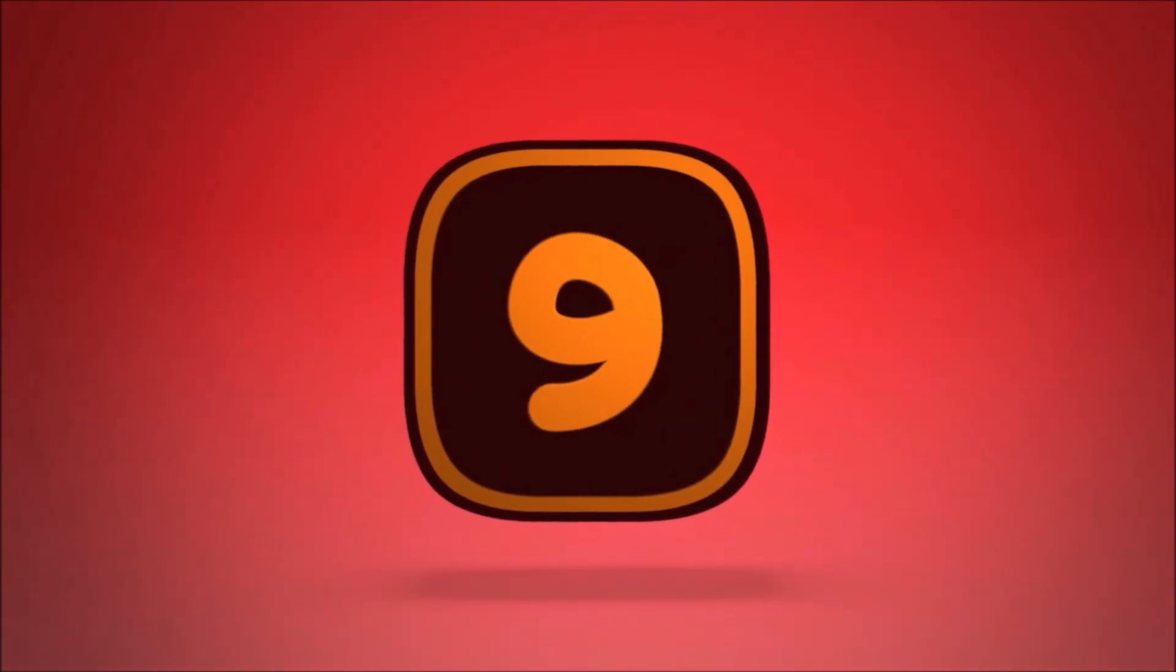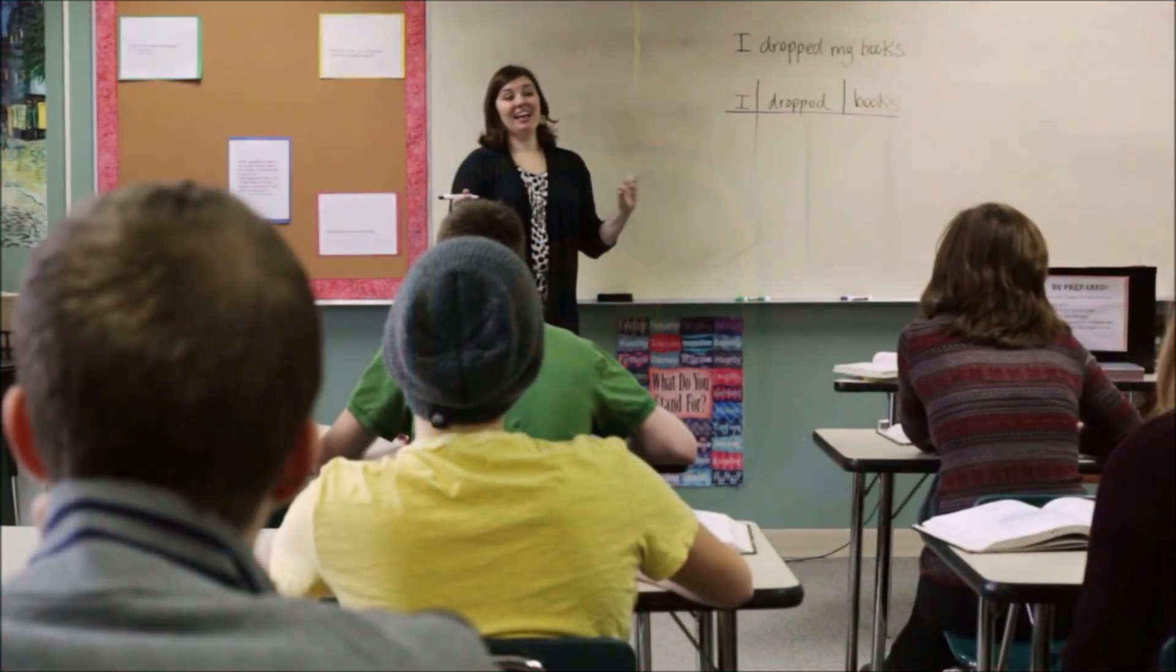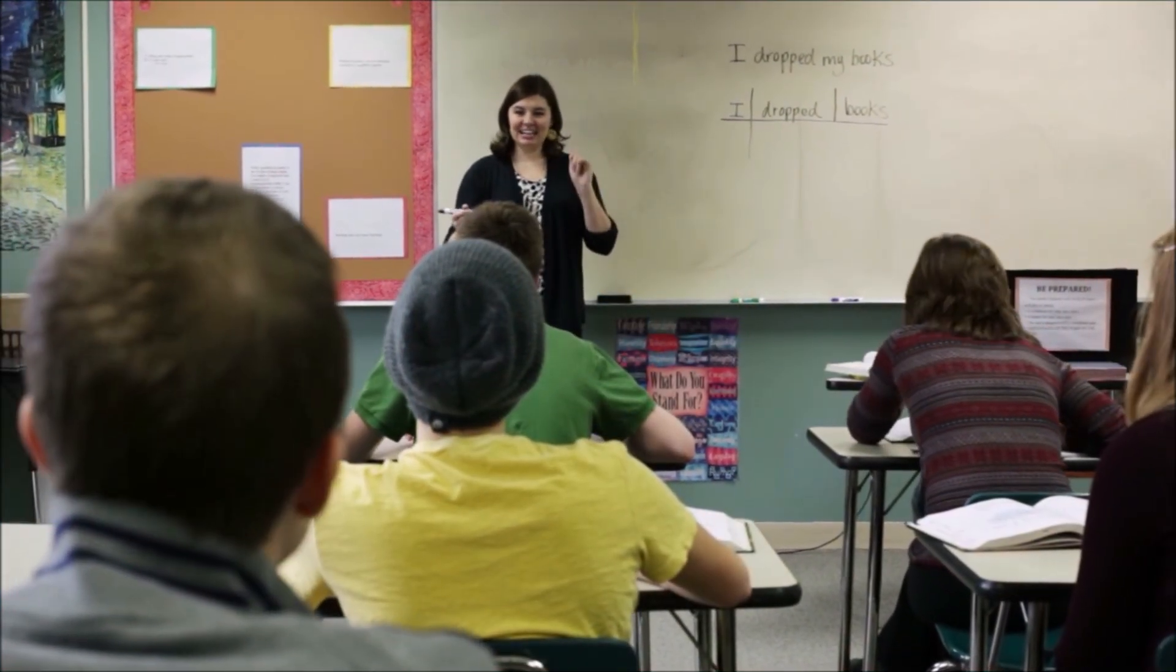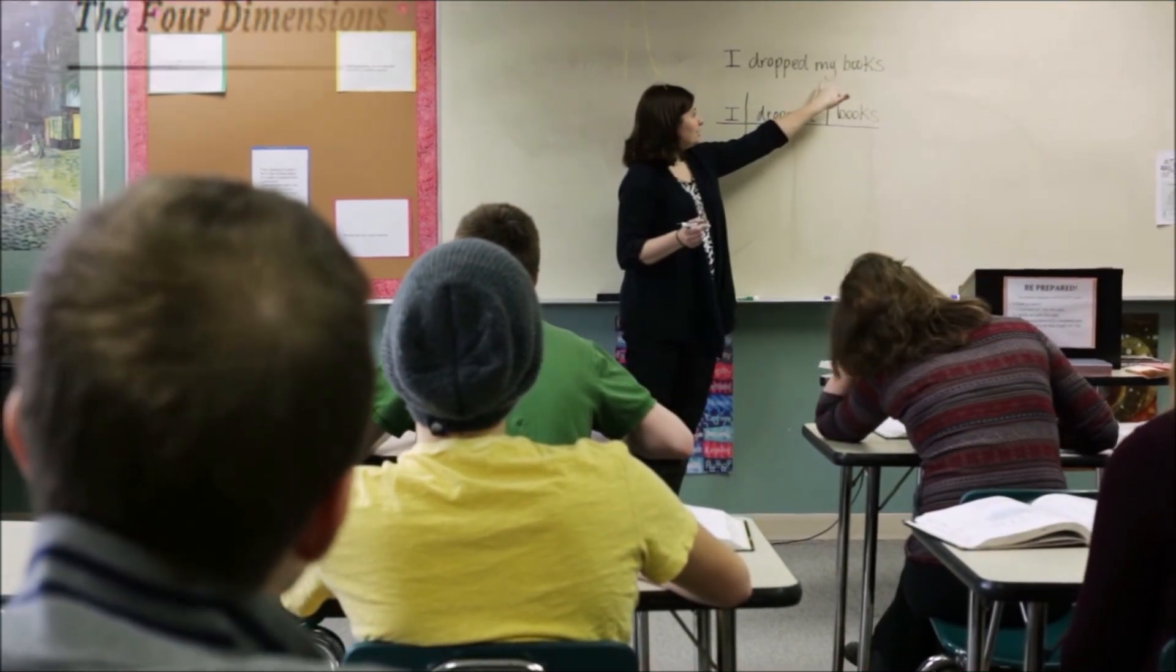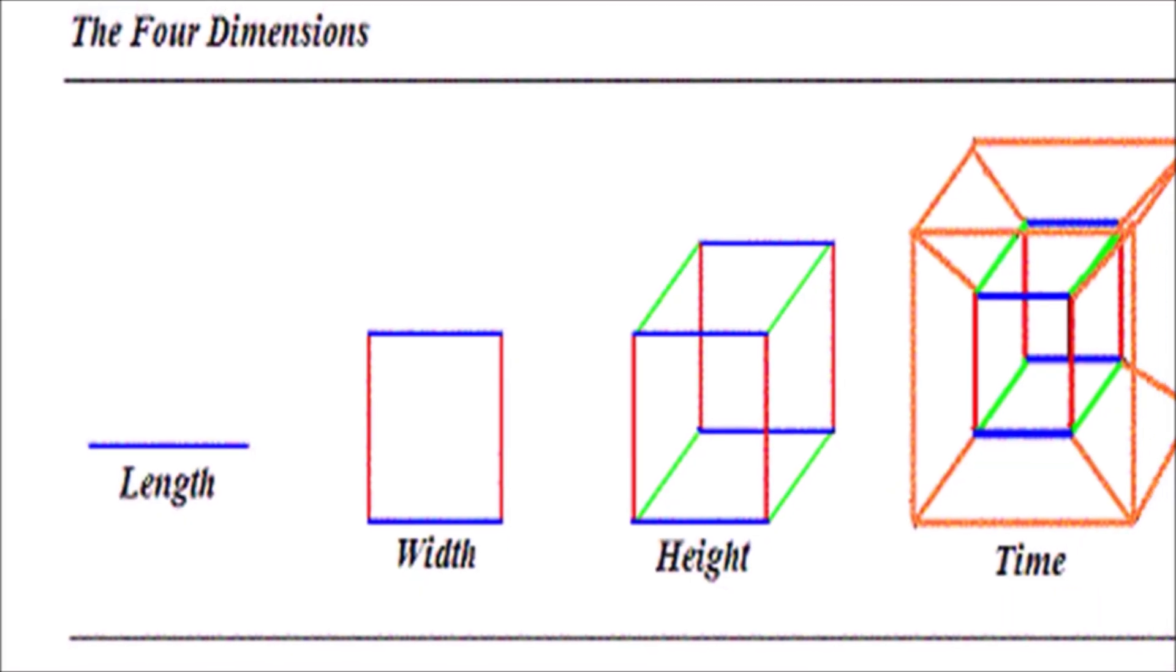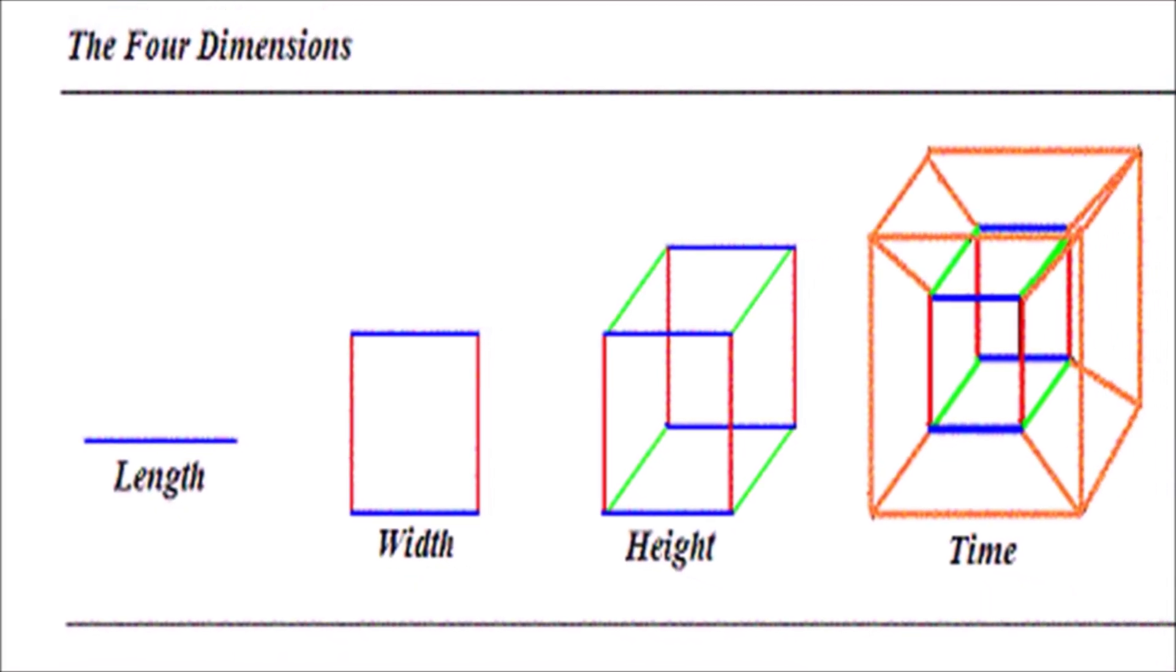There are 10 dimensions in the universe. You probably learned in school that there are three dimensions of space—length, width, and height—plus time as a possible fourth dimension.